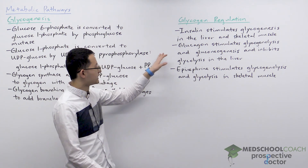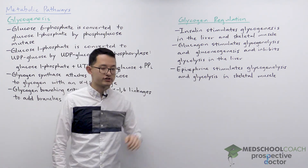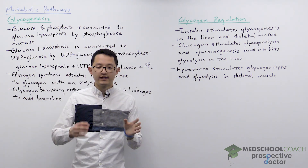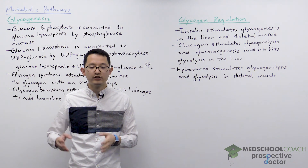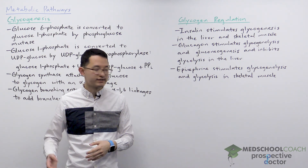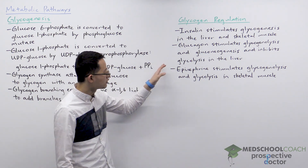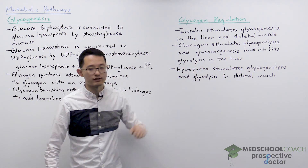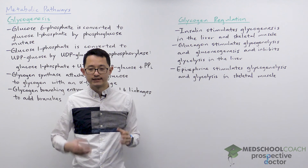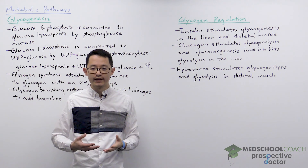In the liver, glucagon will stimulate glycogenolysis and gluconeogenesis, but it will also inhibit glycolysis.